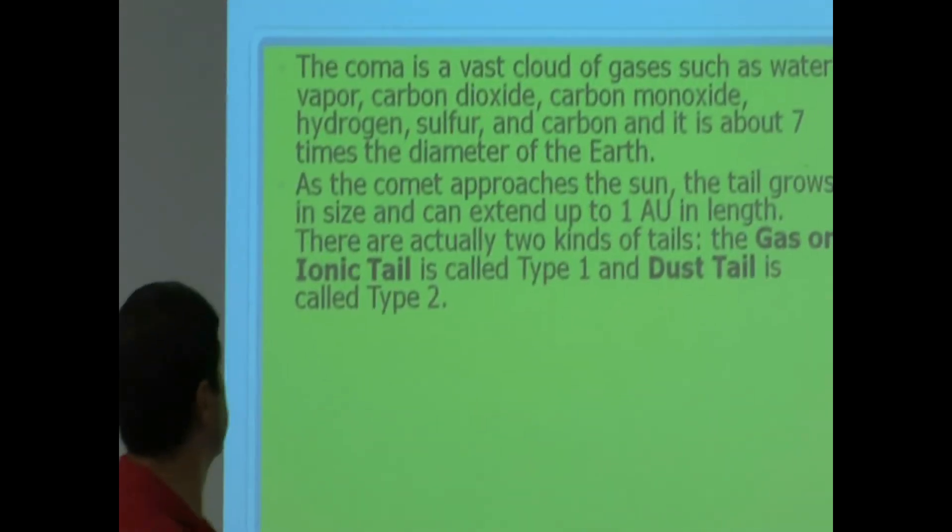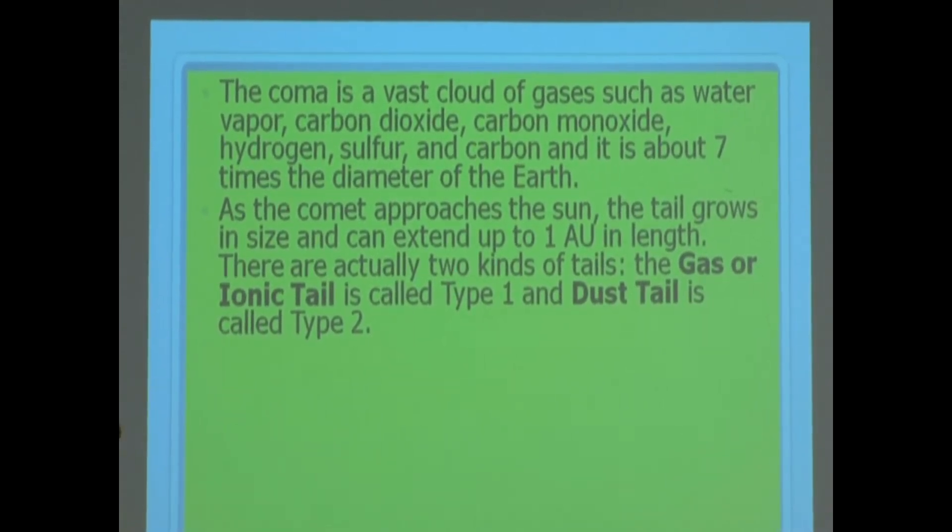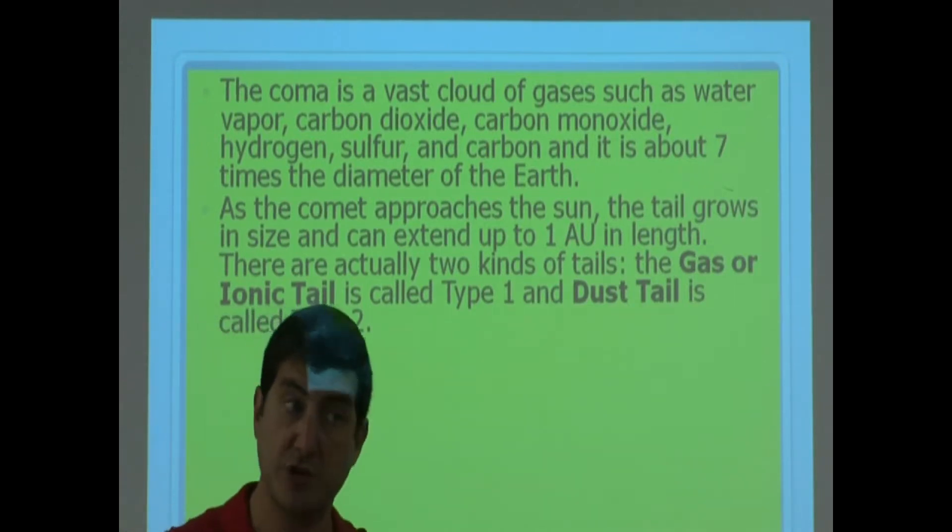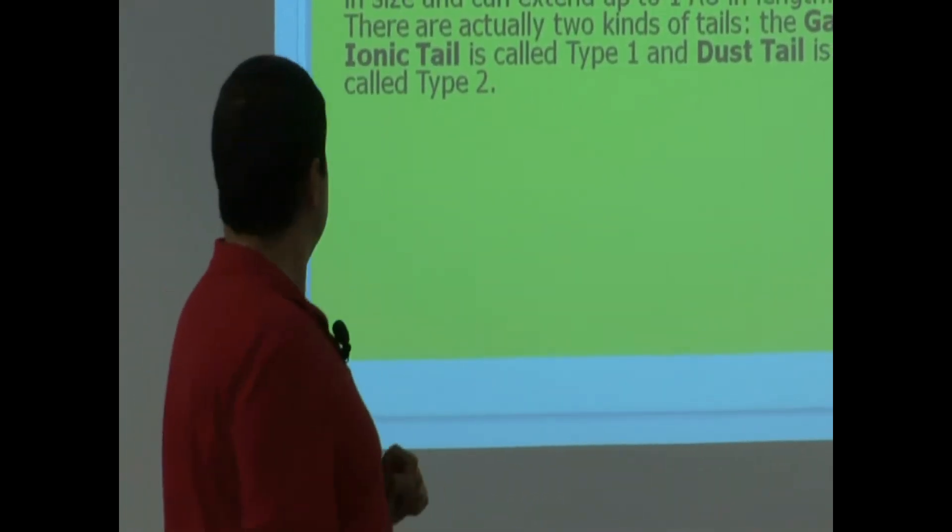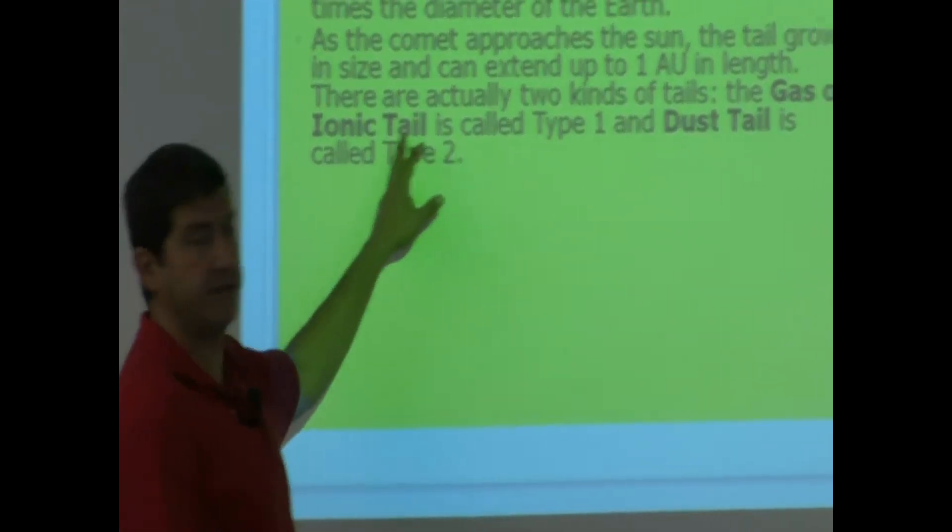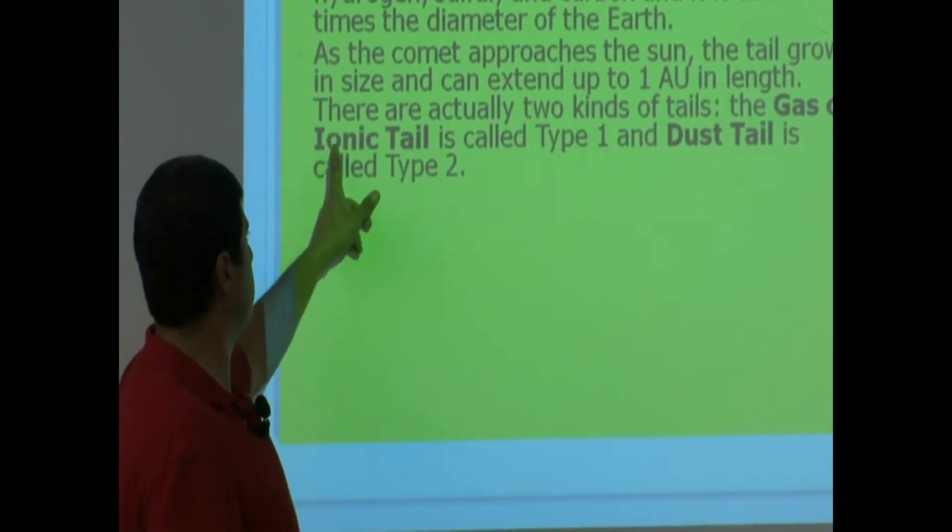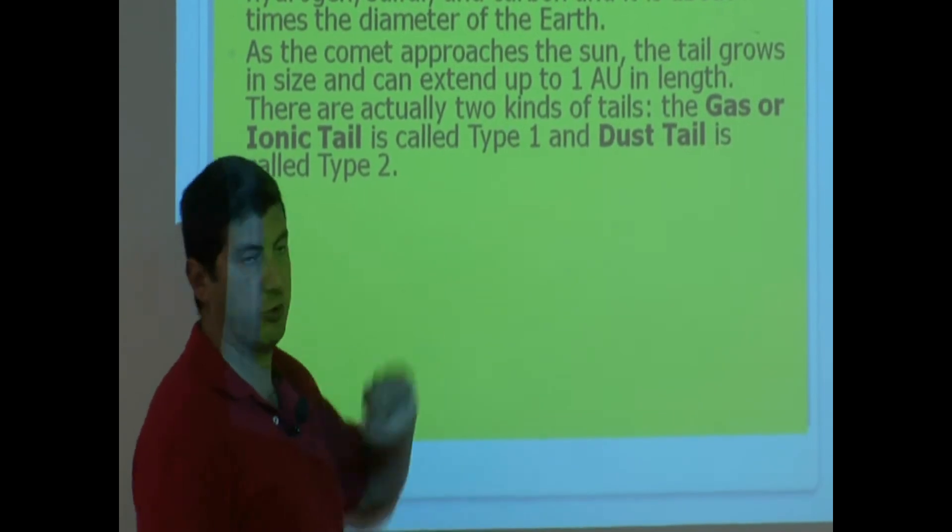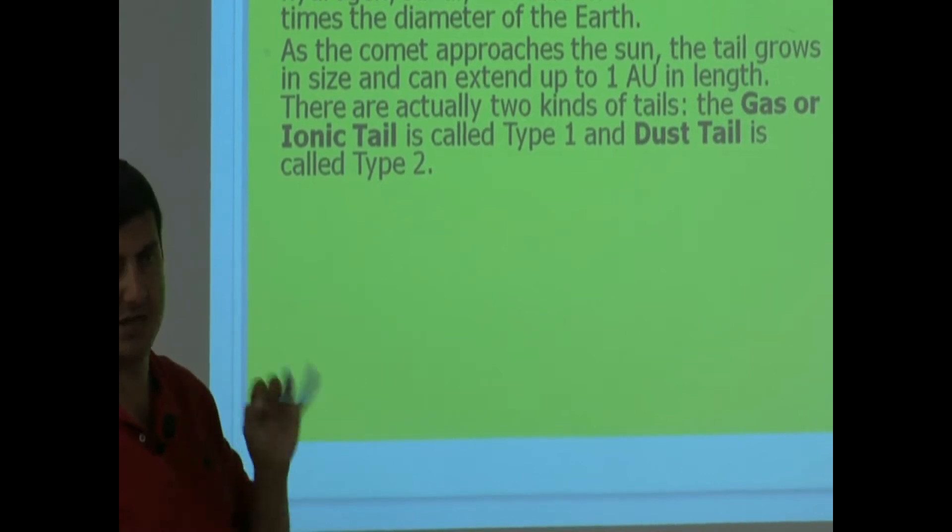So it's got a lot of different things in there. And the more we analyze the comets, the more we can kind of find out what's in there, because a comet is a good indication to us what the solar system looked like in the beginning. So as the comet approaches the sun, the tail grows in size. It starts forming a tail and can extend up to 1 AU in length.